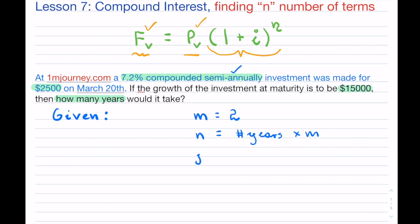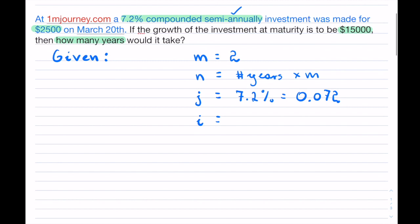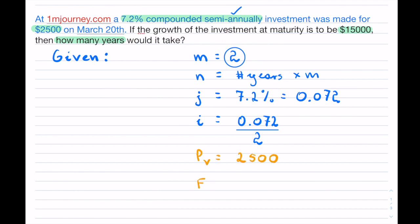The next item I would look for is my nominal interest rate. In this case it's 7.2%. My term rate, or compounding term rate, is 0.072 divided by 2, because we are compounding semi-annually. I have all of this information, and on top of that they provide my present value, which is $2,500, and my future value, which is $15,000. So I have all of this information, but I do not have n. Moreover, I'm not just interested in n — I'm actually interested in the number of years for this investment.